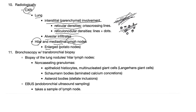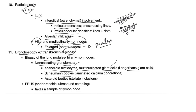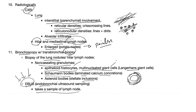You'll find hilar and mediastinal lymphadenopathy — enlarged nodes we call potato nodes. They are painless, but you can't palpate hilar lymph nodes because of the sternum. You can do bronchoscopy with biopsy of those lymph nodes and find non-caseating granuloma with epithelioid histiocytes, which are the macrophages, multinucleated giant cells, Schaumann bodies — laminated calcium concretions — and asteroid bodies, which are stellate inclusions.